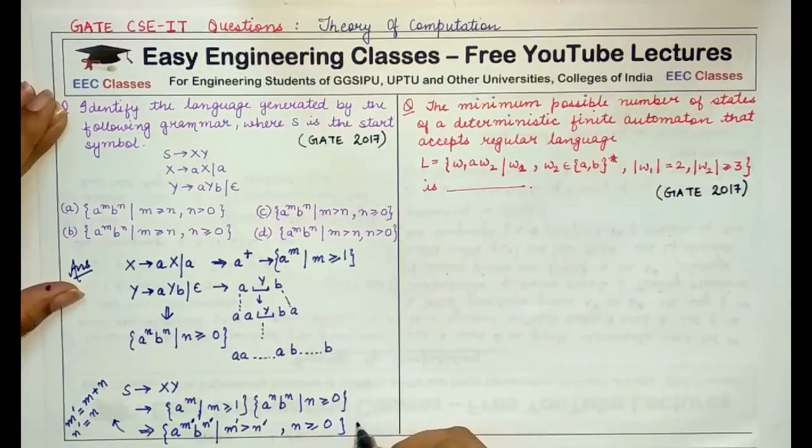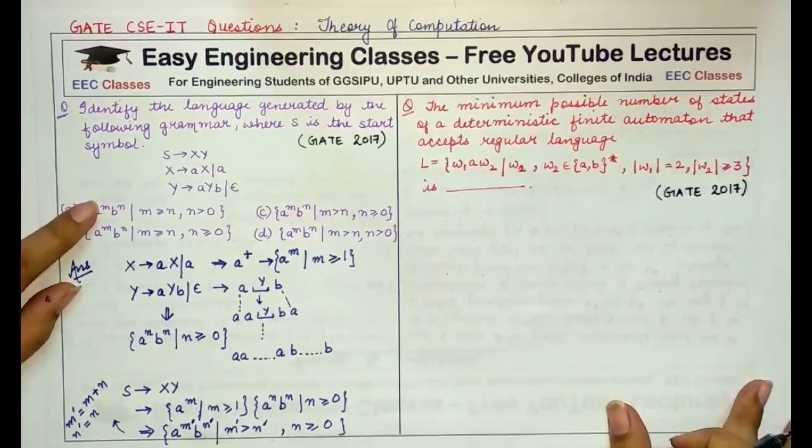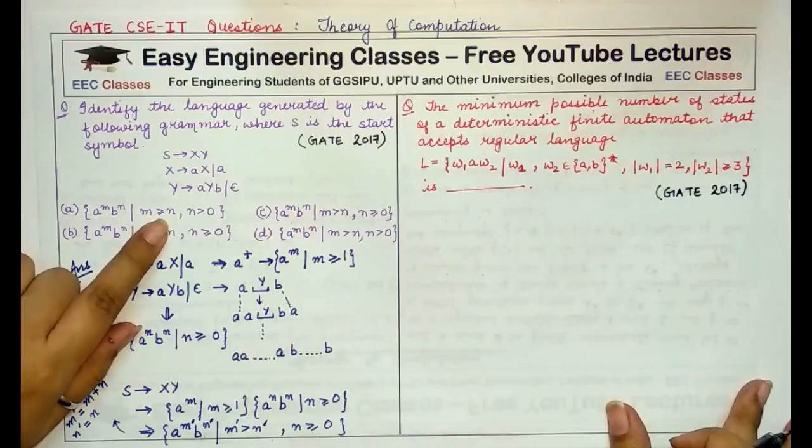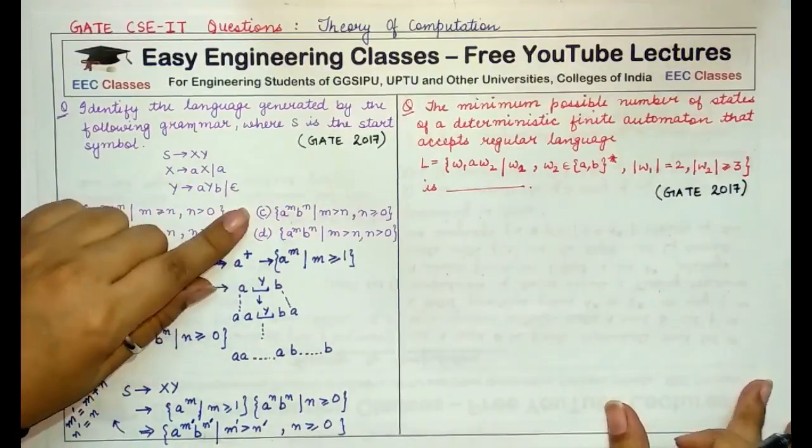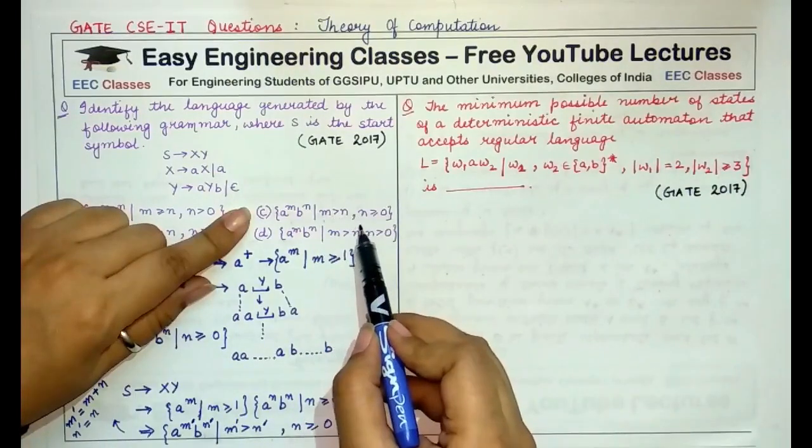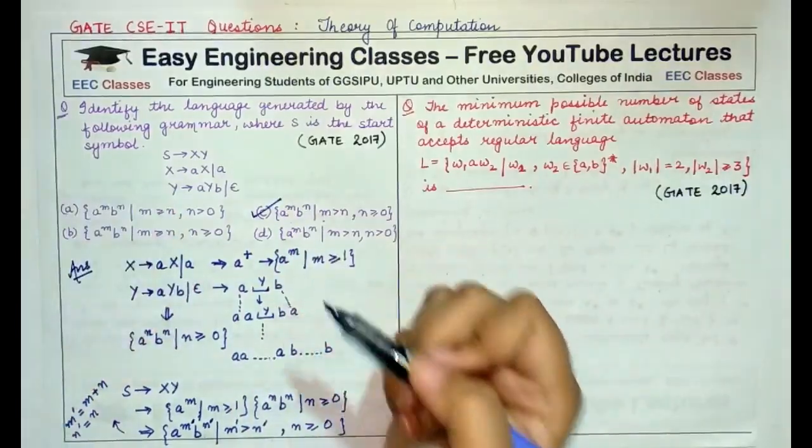Now let's check which answer or which option is correct. A M times B N times M greater than equal to N. No. M greater than equal to N not this option. Now, this option says M greater than N such that N is greater than equal to 0 which is exactly matching our answer.